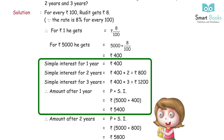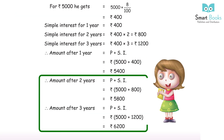Amount after 1 year = Rs 5,000 + Rs 400 = Rs 5,400. Amount after 2 years = Rs 5,000 + Rs 800 = Rs 5,800. Amount after 3 years = Rs 5,000 + Rs 1,200 = Rs 6,200.